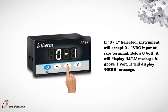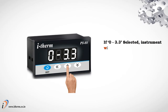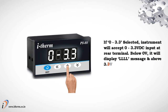Below 0 volt, it will display an LLLL message, and above 1 volt, it will display an HHHH message. If 0 to 5 is selected, the instrument will accept 0 to 5 volt DC input at the rear terminal. Below 0 volt, it will display an LLLL message, and above 3.3 volt, it will display an HHHH message.